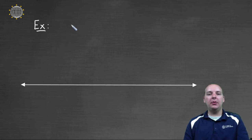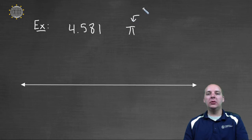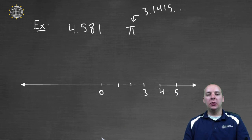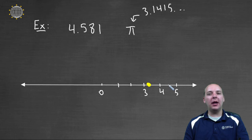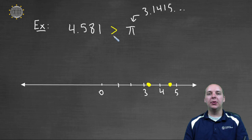Last one and we'll be done. How about we compare four point five eight one with pi. Pi we know is roughly three point one four one five nine, et cetera. On a number line we have zero, one, two, three, four, five. Pi would be roughly right about here at three point one four. Four point five eight one is tough to plot exactly, but it's roughly between four and five. This point, four point five eight one, is to the right of pi on a number line, so that means it's greater than pi.